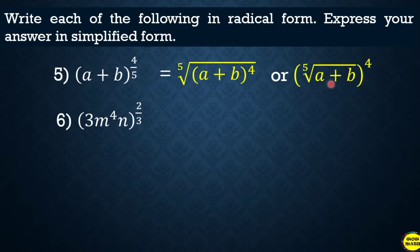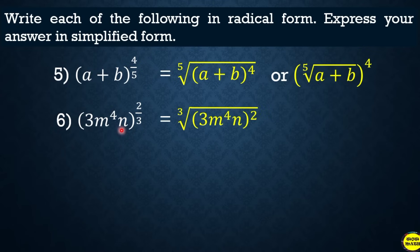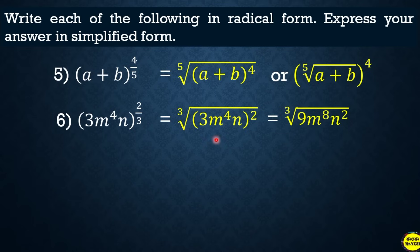Another example: the quantity of 3m raised to 4n, all raised to 2 thirds. This can be simplified further. We know 3 squared is 9. Applying the power of a power rule, we multiply the inner exponents by the outer exponent: 4 times 2 gives m raised to 8, and n's exponent 1 times 2 gives n squared. Therefore the answer is the cube root of 9m raised to 8, times n squared.